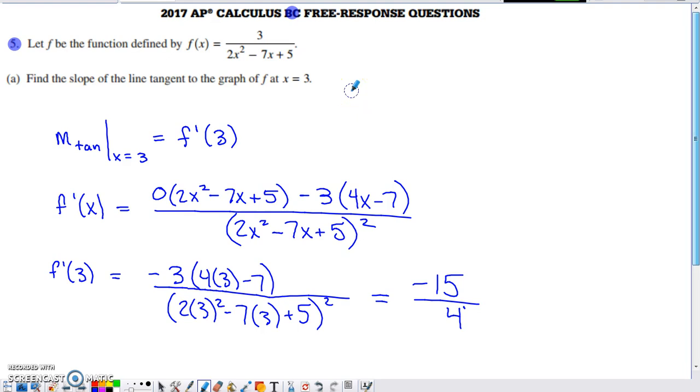You want the slope of the tangent line to a function at a certain x. You need the derivative of that function, and you need to evaluate it at the x where you want to find the slope of the tangent line.